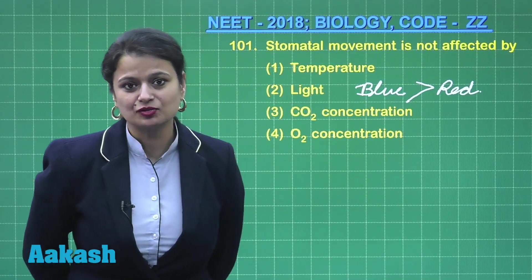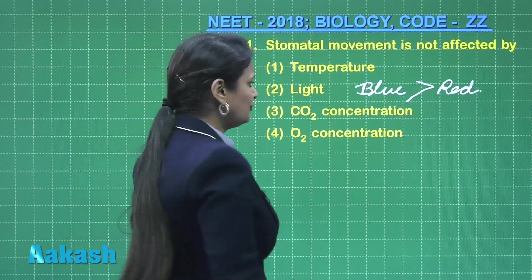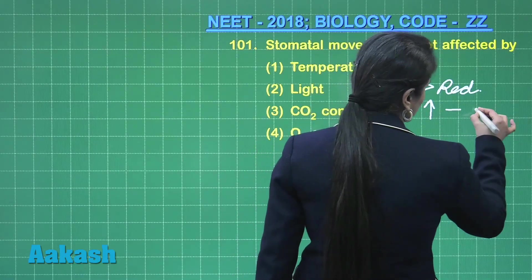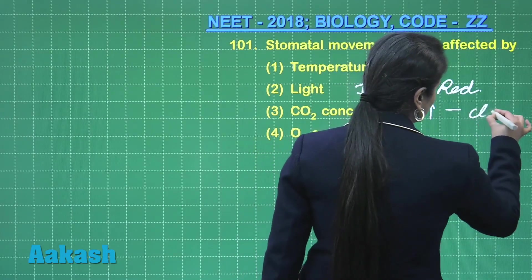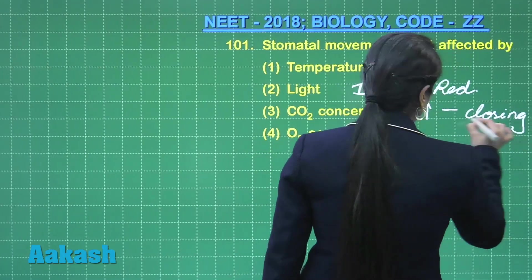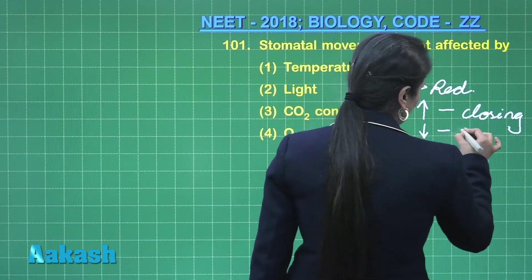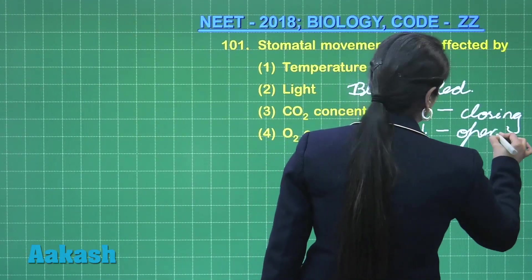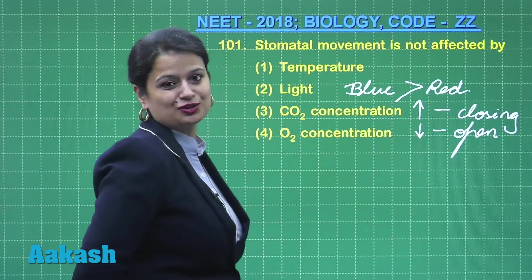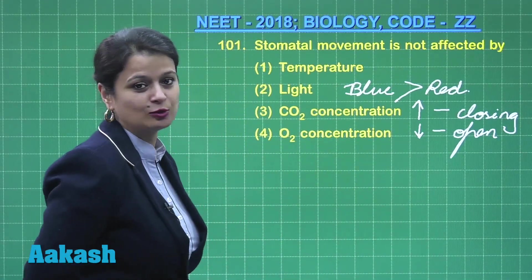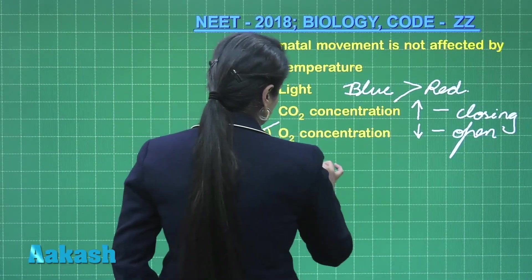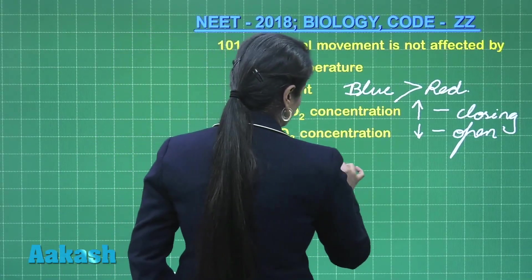Carbon dioxide concentration: if CO₂ concentration is high, it results in closing of stomata; if CO₂ concentration is low, it leads to opening of stomata. Oxygen concentration, however, is not going to have any effect on stomatal opening and closing. So the right answer for this question is option number 4.